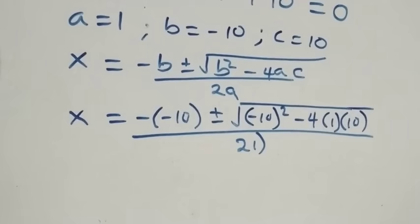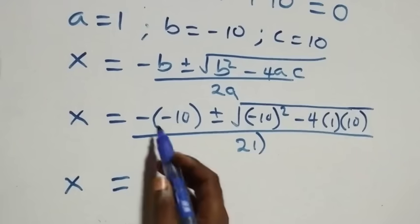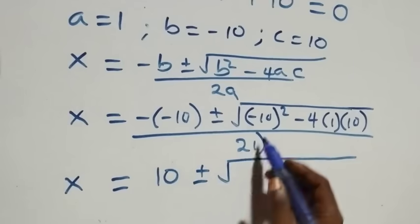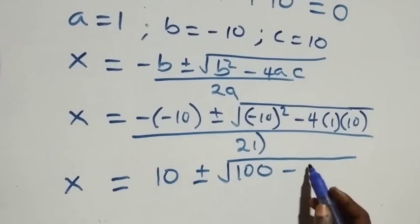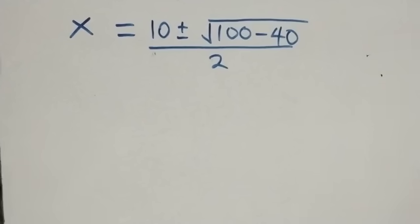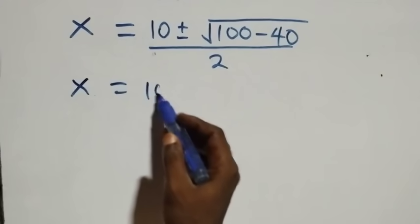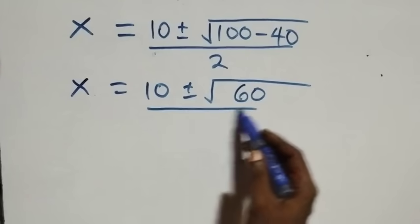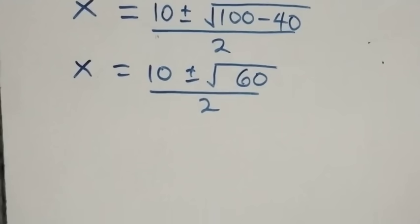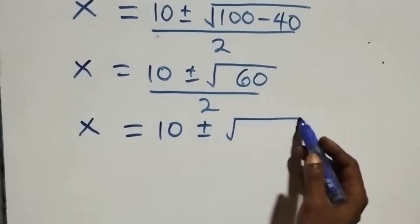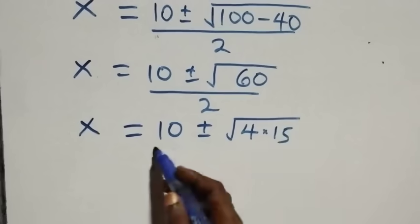This gives us x equals 10 plus or minus square root of 10 squared, over 2. This becomes x equals 10 plus or minus square root of 100 minus 40, which gives us square root of 60, over 2. We can factor 60 as root 4 times 15, over 2.